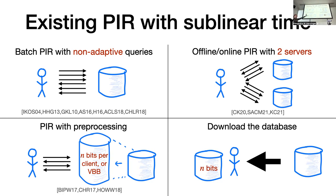So at this point, the world of private information retrieval is in an undesirable state. We just saw that there are compelling applications, but we don't have any schemes that are easy and cheap to deploy.